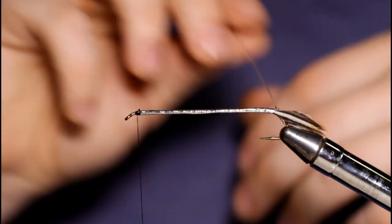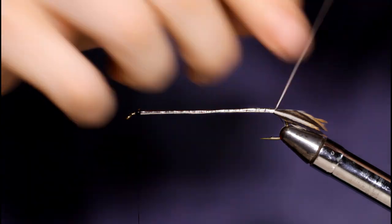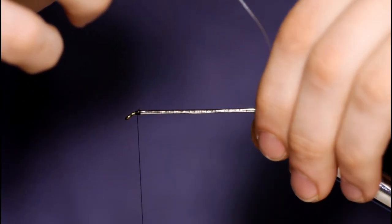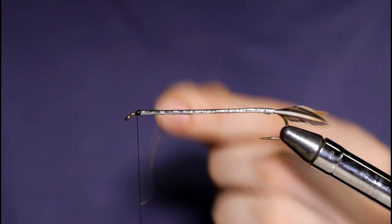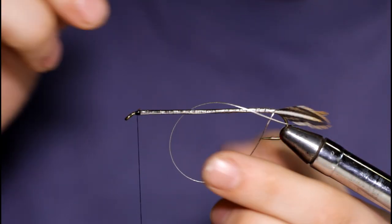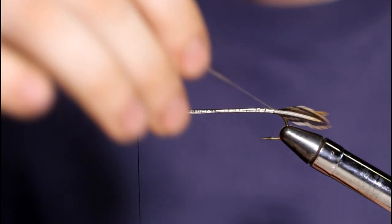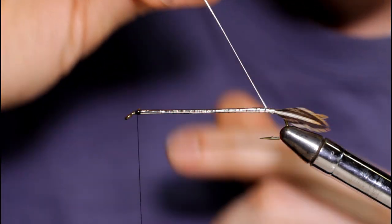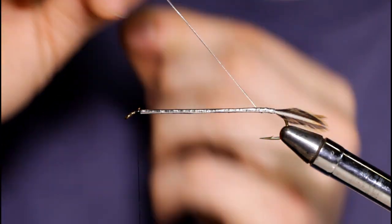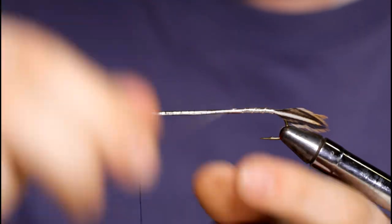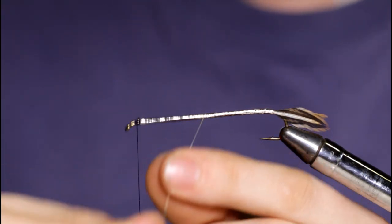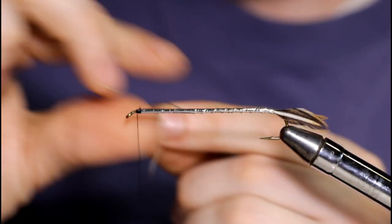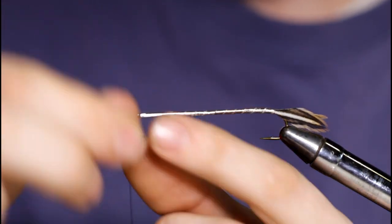And now I'll wrap my oval tinsel forward. I think that tail looks a little bit long to me, but that's all right. I already know I'm going to be overdressing this fly because my grizzly hackle is kind of webby. I don't have any nice thin ones left. So I'm just taking some nice spiral wraps forward here.